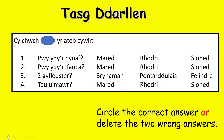Let's take a look at the first four key questions. Cwestiwn 1: pwy ydy'r hynaf? Cwestiwn 2: pwy ydy'r ifancaf? Cwestiwn 3: dau gyfleuster. Cwestiwn 4: teulu mawr. You need to circle the correct answer or delete the two wrong answers. You need to be able to work out what the keyword hynaf means, ifancaf, and the word cyfleuster. Cyfleuster is a mutation — normally it begins with the letter C. Go back to the text and see if you can work out which one of the three possible answers is correct for each question.